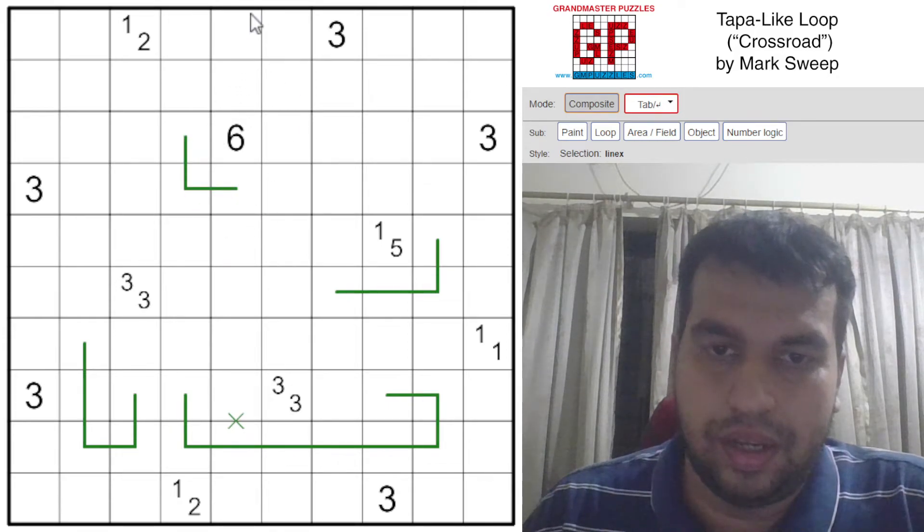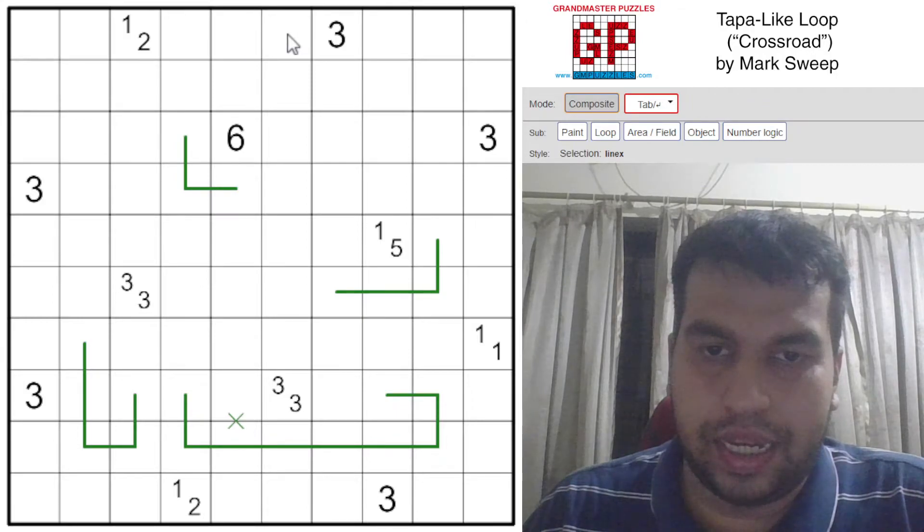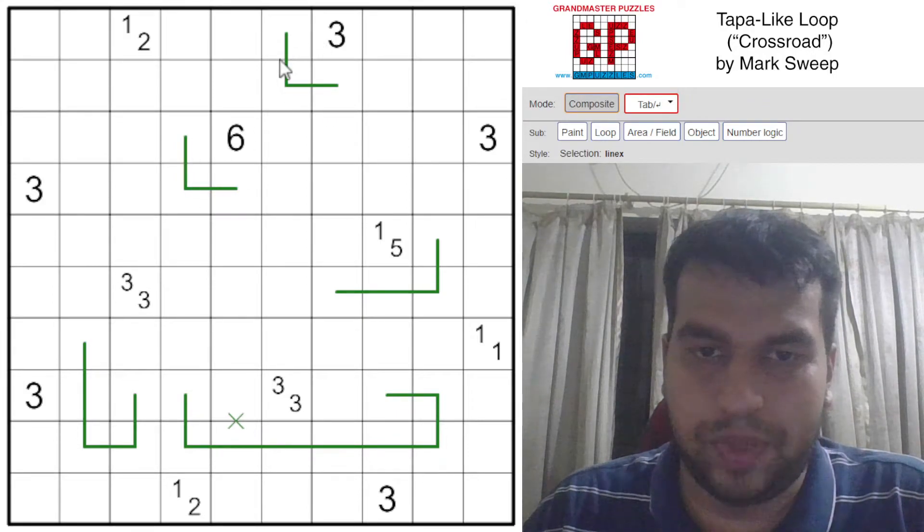These will always be there. Now I also know that I cannot take this cell of the three because that would break the 6. So I mark this out.